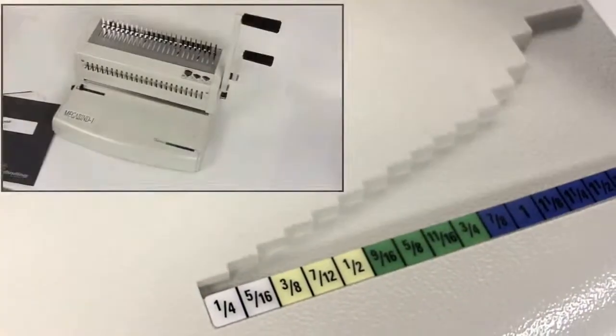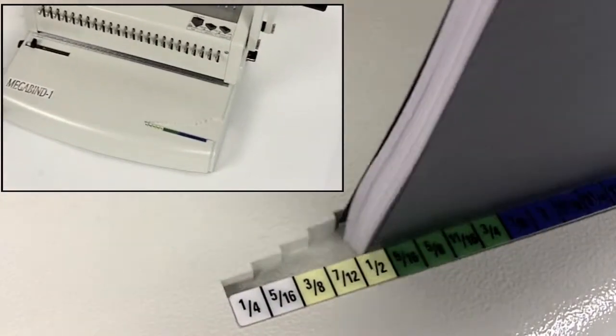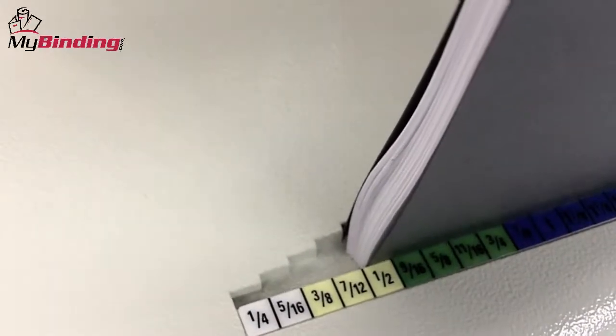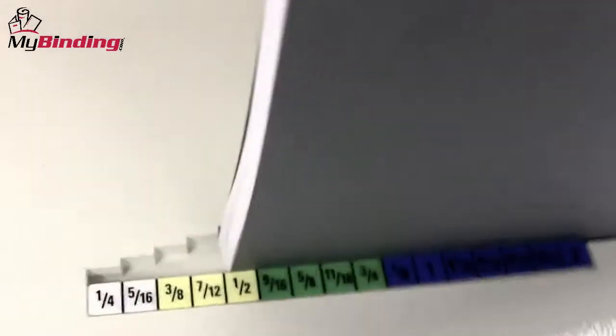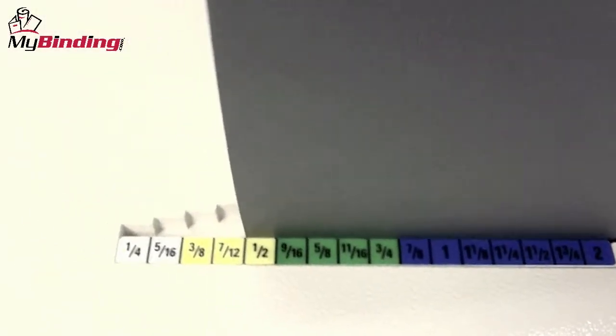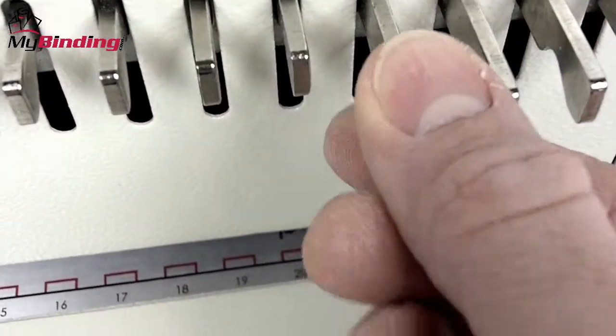This machine even has a built-in binding guide on the document table to help you choose the right size of comb for your project. Simply slide the papers in and you can read what size you need. It has 24 fully disengageable dies.